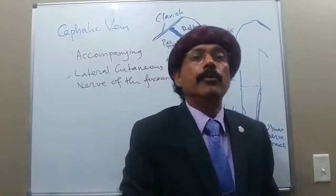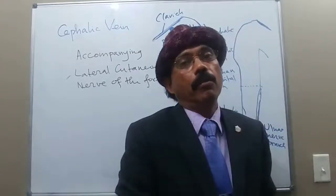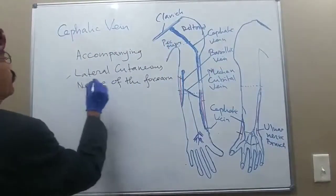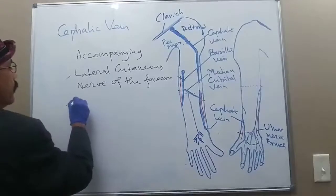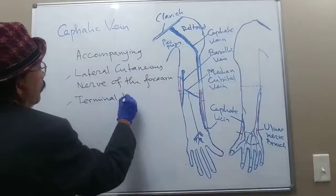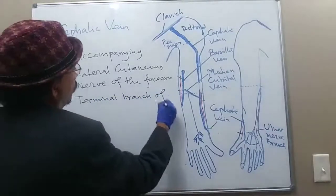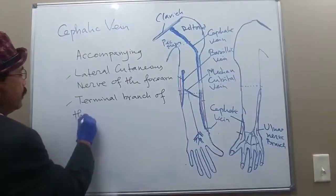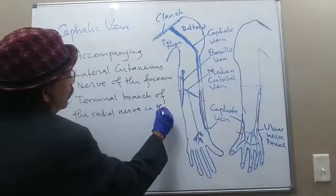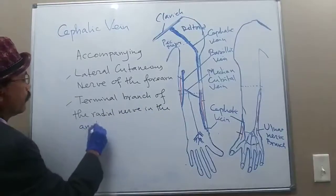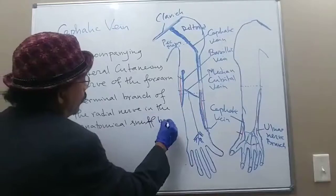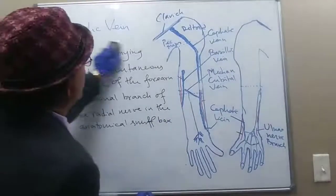The lateral cutaneous nerve of the forearm is a continuation of the musculocutaneous nerve, which is a nerve from the lateral cord of the brachial plexus. The cephalic vein also accompanies the terminal branch of the radial nerve in the anatomical snuffbox.